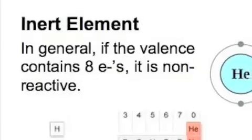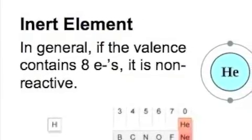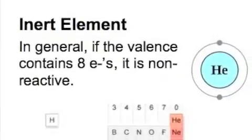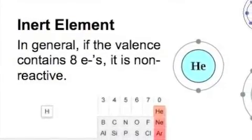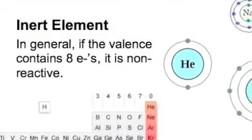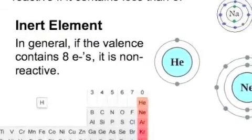An inert element is one that has a full valence. So that one is not going to be reactive. Only the atoms that don't have a full outer shell, the valence, will be reactive.